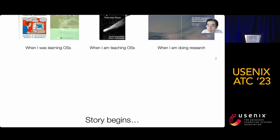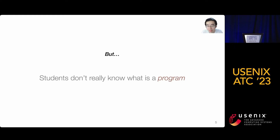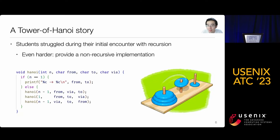Let's kick off by defining what is an operating system. There is a body of software responsible for making it easy to run programs — that's our operating system. But the big problem here is that students don't really understand what is a program. To back up this claim, I'd like to have a little mind-tracing programming assignment for all of you: the Tower of Hanoi. I'm expecting most of you encountered this example in your introductory programming language course.